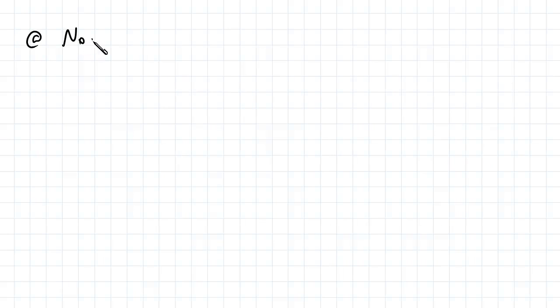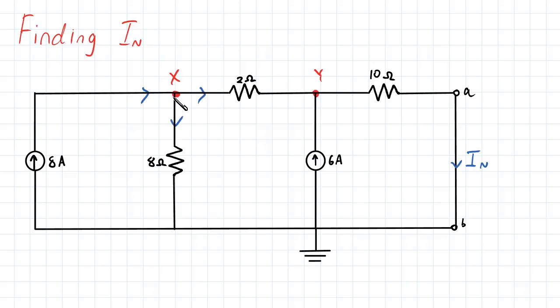At node X, what we have is we're going to have VX on 8 plus VX minus VY on 2 minus 8 is going to equal to 0.